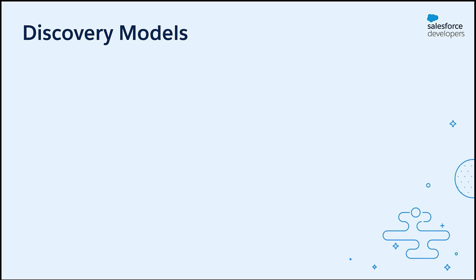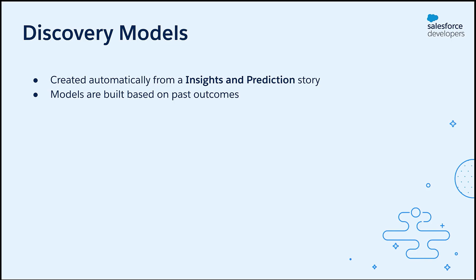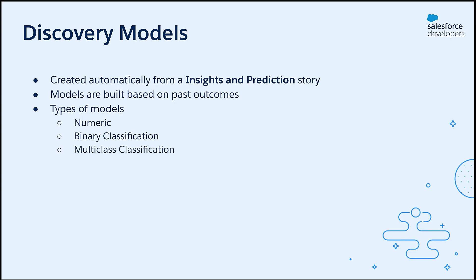Now let's talk about discovery models. When we create a story with type as insights and predictions, Einstein discovery creates a discovery model automatically. We don't need any coding or machine learning knowledge to build these models. Discovery models are built based on a detailed understanding of data as well as past outcomes. Einstein discovery uses three types of models: a numeric model, which gives outcomes like count or currency; binary classification, which gives an output with two possible results like true or false; and multi-class classification, which can be used when we have multiple possible results — for example, to predict the next stage of an opportunity.